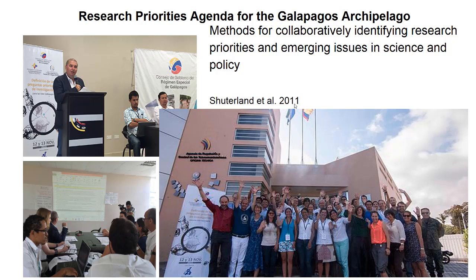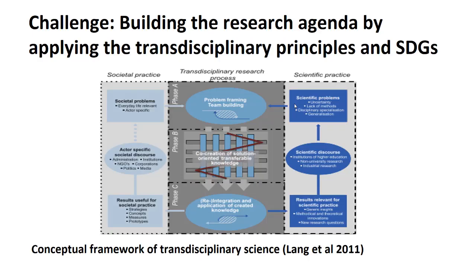Each methodology can be improved or transformed thinking also from the local perspective — each institution or community has its own features and characteristics. You can apply tools from the SDG goals, transdisciplinary science, and science diplomacy to create a local methodology for your academic institution. I've been thinking about how we can build a research agenda by applying transdisciplinary principles and the SDG framework, using the three phases from the Lange paper: Phase A — jointly describing the problem where social and scientific practice come together; Phase B — co-creation of solutions; and Phase C — integration and application of created knowledge.